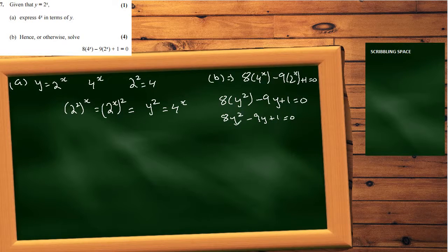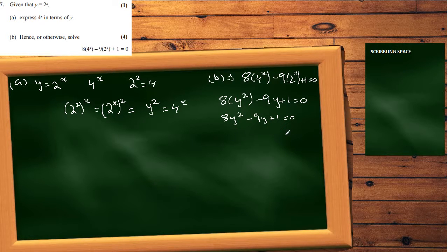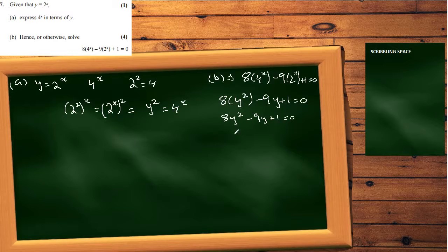When solving a quadratic equation set equal to zero, you get two answers because the power is 2. So we'll get y equal to one number and y equal to another. But that's not the end — since we need x, we'll substitute back using y equals 2 to the x. This is the substitution method.